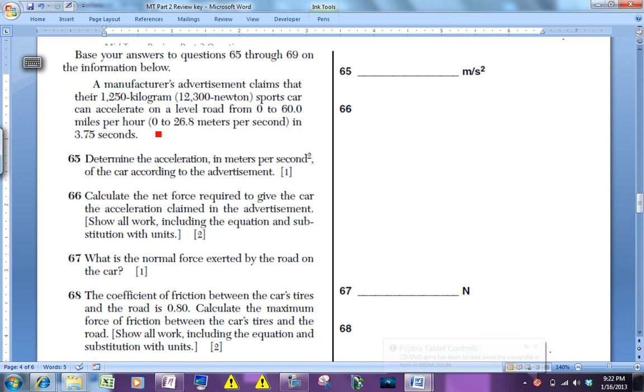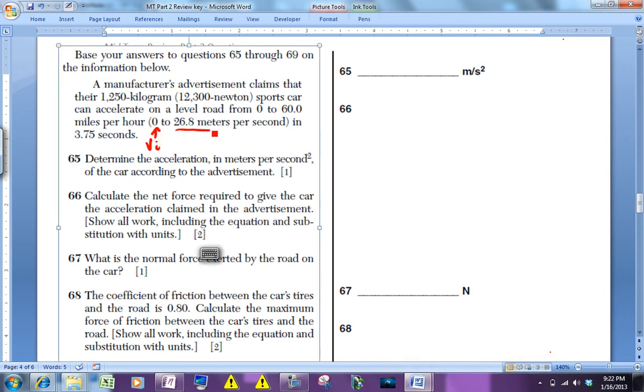This zero here is going to be the initial velocity. 26.8 meters per second is going to be the final velocity. And you're told that the time is 3.75 seconds, which is a very good 0 to 60 time for a car.